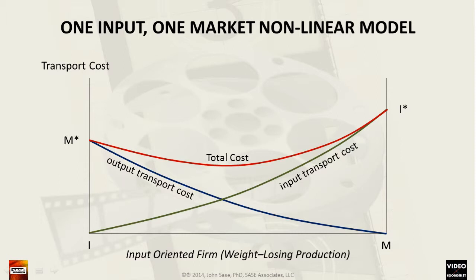This treatment continues the example introduced in Topic 7. However, in this variation we will use non-linear cost functions such that they will determine only one optimal location for production to occur.